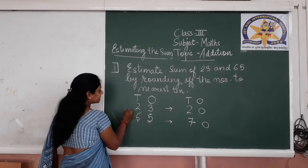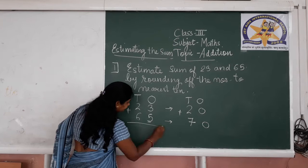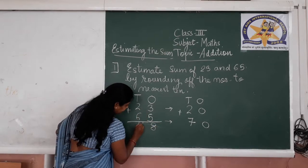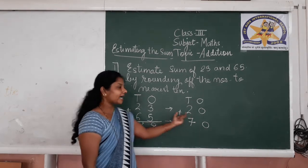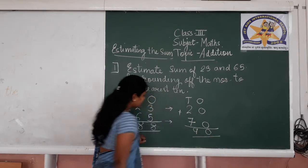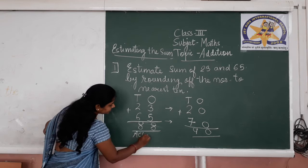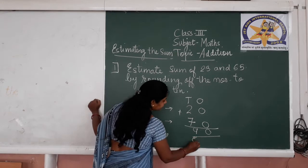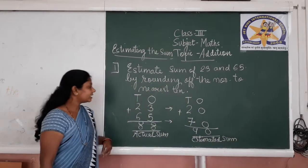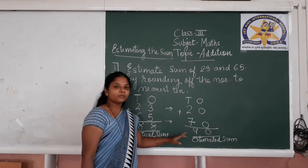The second step is to add the numbers. Let us add the actual numbers: 3 plus 5 is 8, and 2 plus 6 is 8, so the actual sum is 88. Now let us add the estimated (rounded) numbers: 0 plus 0 is 0, and 2 plus 7 is 9, so the estimated sum is 90. So 88 is the actual sum and 90 is the estimated sum. In this way, you have to estimate the sum — round off the numbers to the nearest 10, add them, and write down both the estimated sum and the actual sum.